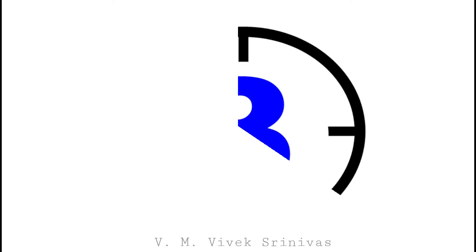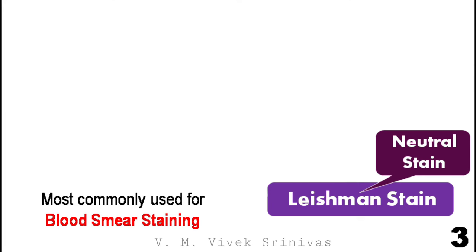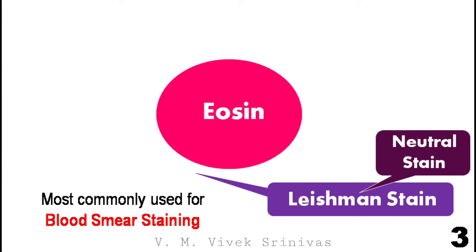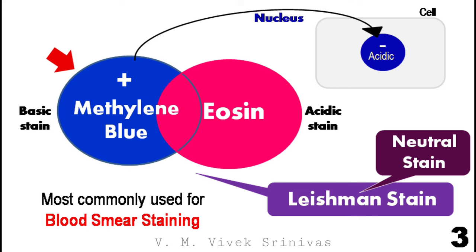Lastly, the neutral stain. The example is the Leishman stain. This stain is most commonly used in the blood smear staining technique. It consists of eosin, which is an acidic stain, and methylene blue, which is a basic stain. Methylene blue is positively charged, having high affinity for the acidic components — that is, the negatively charged structures of the cell, like the nucleus.